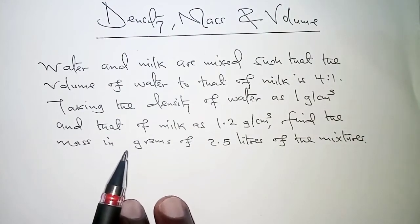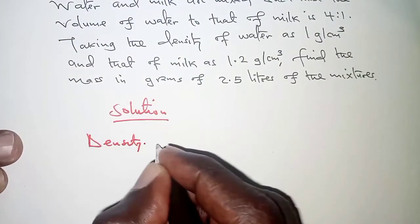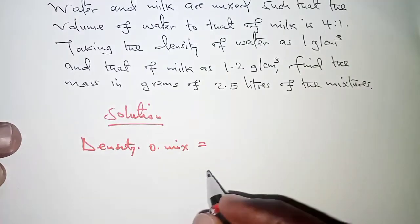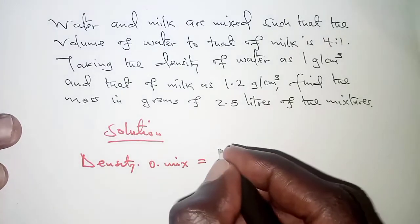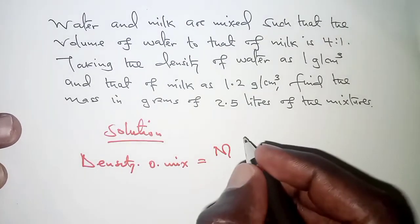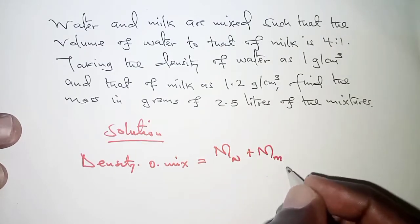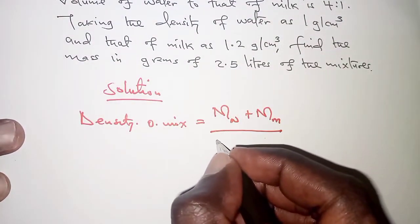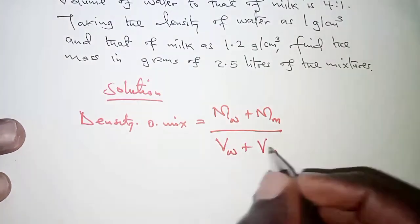The first thing we need is the density of the mixture. Density of mixture is obtained by dividing the mass of the mixture by the volume of the mixture. For the mass of the mixture we combine two masses: mass of water plus mass of milk, divided by the total volume, which is volume of water plus volume of milk.